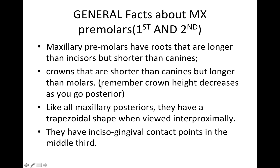As you move posteriorly in the mouth, the crown height decreases. Like all maxillary posteriors, they have a trapezoidal shape when viewed from the proximal, and they have incisogingival contact points in the middle third.